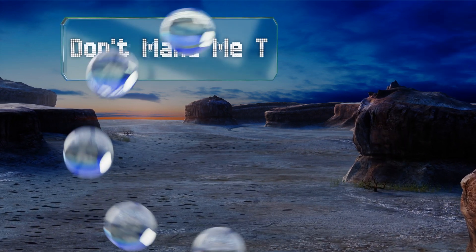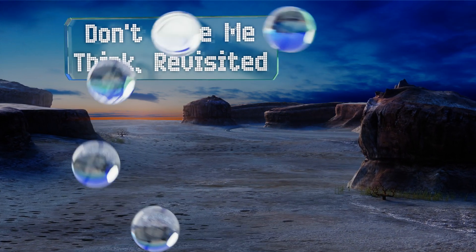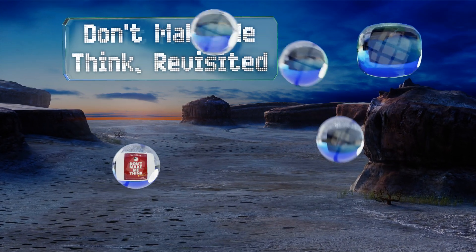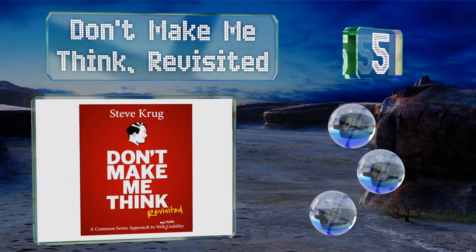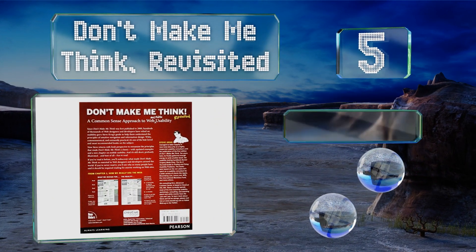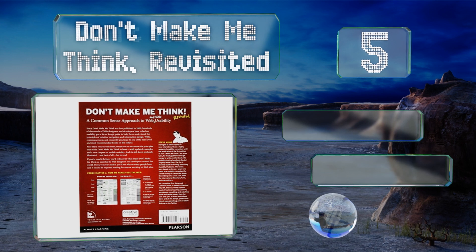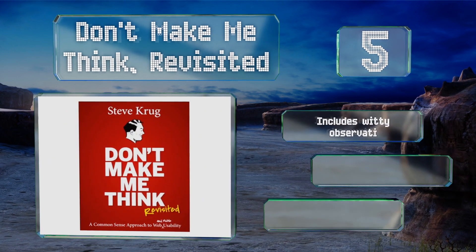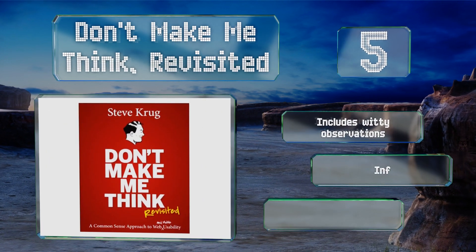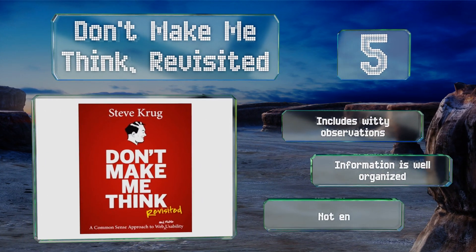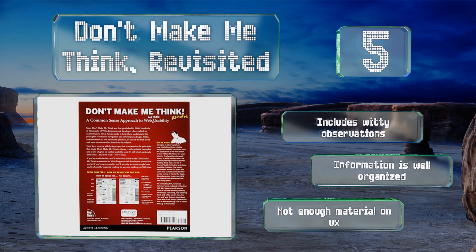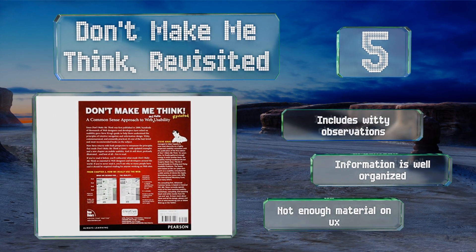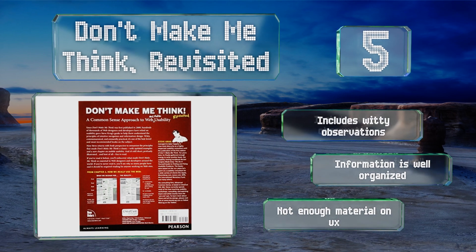Halfway up our list at number five, with plenty of helpful illustrations, 'Don't Make Me Think Revisited' takes a common sense approach so people at any experience level can understand the basics. Clearly written without jargon, it makes a tricky subject feel simple. It includes witty observations and the information is well organized, but there's not enough material on UX.